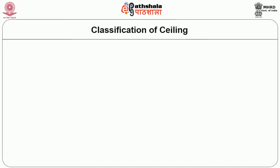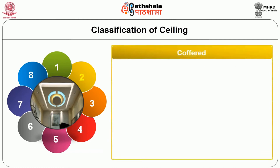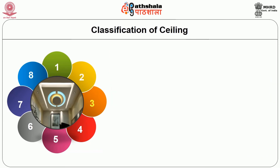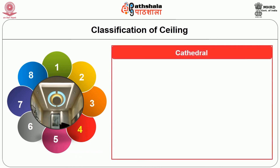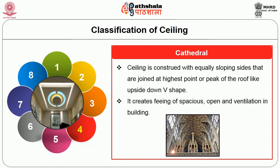Next, the classification of ceilings — ceilings are classified based on appearance and materials. The first type is flat ceiling, which is the conventional type used in most buildings with a standard height of 3 meters. Coffered ceiling creates a wafer-like pattern and is made up of a grid of sunken panels with octagonal or square shapes. Suspended ceiling, also termed drop ceiling, is a secondary ceiling hung below the flat ceiling with lightweight ceiling panels fixed by metal hangers or wires. Cathedral ceiling is constructed with equally sloping sides joined at the highest point or peak of the roof in an upside-down V-shape, creating a feeling of spaciousness, openness and ventilation; a church ceiling is the best example.